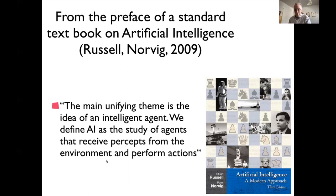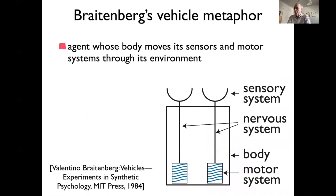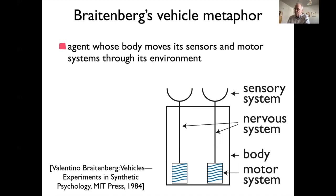I want to use a metaphor introduced by Valentino Braitenberg, a neuroanatomist, who used the notion of 'vehicles' — agents whose body moves sensors through the world as the motor systems generate movement. Abstractly speaking, it's a vehicle where the sensors move when the motors move the body. He used this to illustrate principles of the brain, though I won't focus on neuroscience as much as the first lecture did.